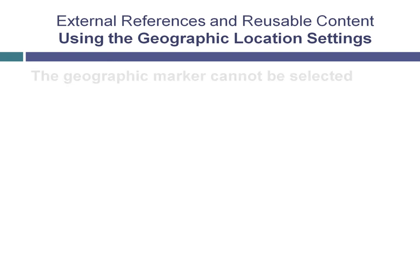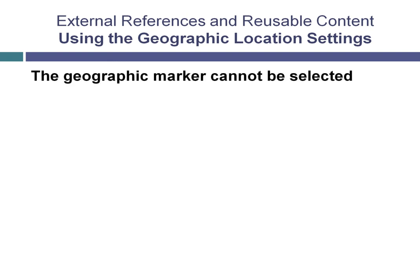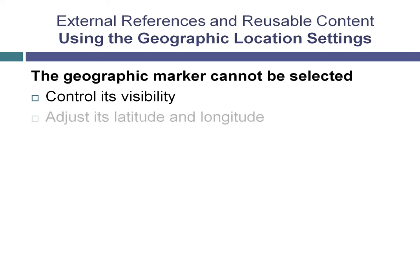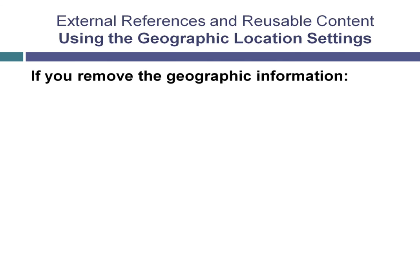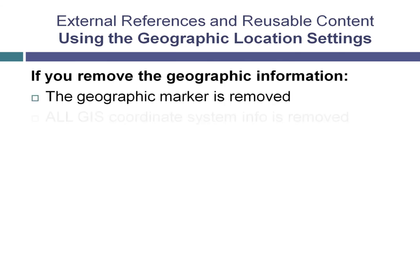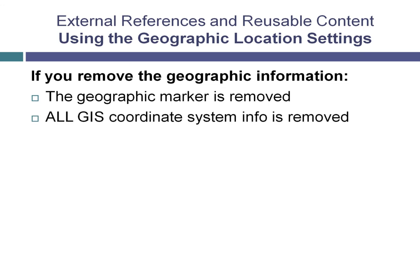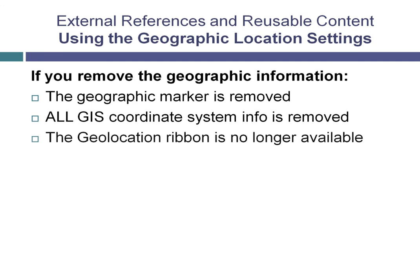Although the geographic marker cannot be selected, you can control its visibility. You can also adjust its latitude and longitude without changing the location of the geographic marker in model space. Also note that if you ever remove the geographic information from the drawing, the geographic marker and all GIS coordinate system information is also removed from the drawing and the Geolocation ribbon is no longer available.